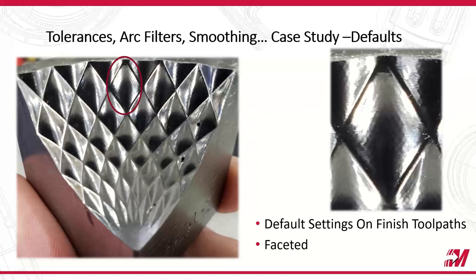So we took our first stab at this part and just like most of you guys probably do, applied our first toolpaths. Go and cut it — cut great, roughed out good, finished, even ran great, sounded good. But I go look at the finished product and I get this tessellation, these triangles, these diamonds on top of other diamonds. You can see this finish right here — it's not looking so good. Very faceted, and just in general, it's not a great surface finish, not a good RA. This was just with straight-up default settings in our toolpaths.